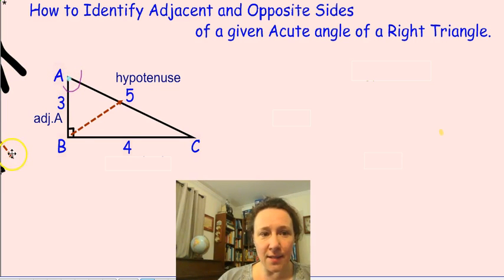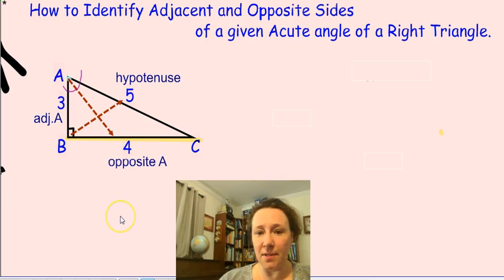notice that right across from angle A there is side BC. Side BC is the only side—take a look at it individually—that does not grow from vertex A, and it is the side that we call opposite to angle A. So this completes setting up the triangle for working with trigonometric ratios.